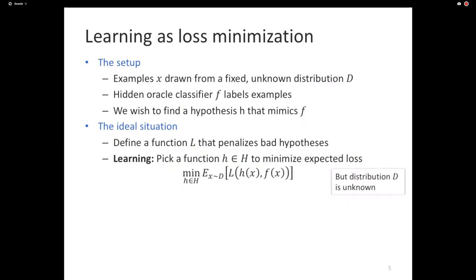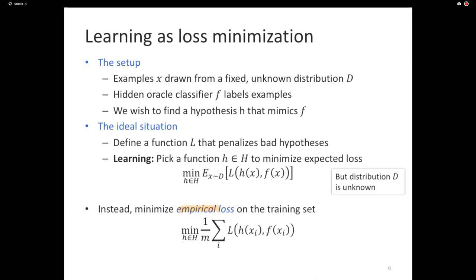Unfortunately, we do not have access to this distribution. So instead, what we will do is sample from that distribution. The process of collecting a training data set is nothing but sampling from this distribution because all training examples come from the distribution. So rather than minimizing the expected loss, which we just don't have access to, we will minimize the empirical loss.